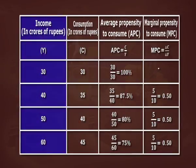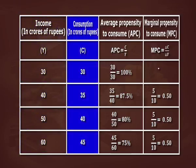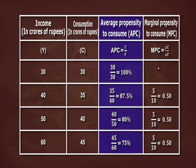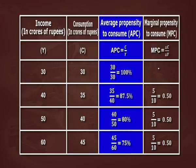In the table shown, with an increase in income by rupees 10 crore, the amount of consumption has risen by rupees 5 crore, and the remaining amount has been saved. While MPC remains constant at rupees 5 crore, APC is falling with the increase in income. This is termed the Keynesian consumption function — it is linear as MPC, which measures the slope of the consumption function curve, is constant. The fall in APC with the increase in income implies that increase in consumption is not proportional to increase in income, and MPC is less than APC at various levels of income.